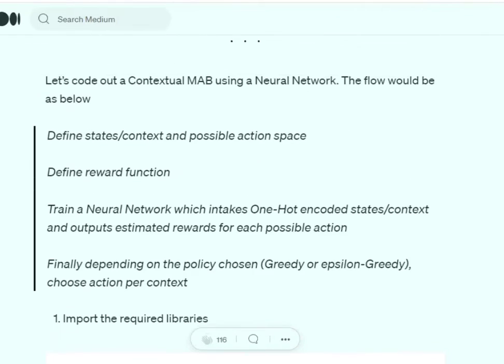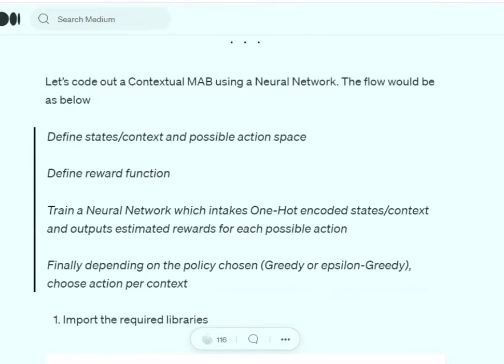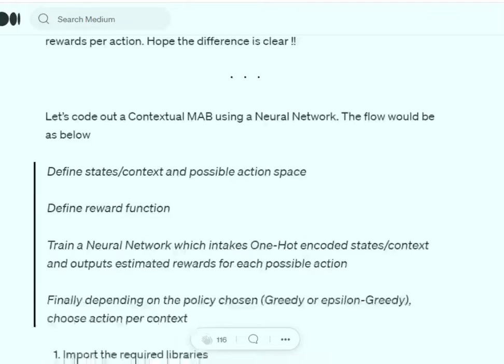Now let's jump onto the codes. This would be the code flow we would be using. Define states and context and possible action space for the environment. We're defining a reward function. We will be training a neural network which intakes one-hot encoded states or context.